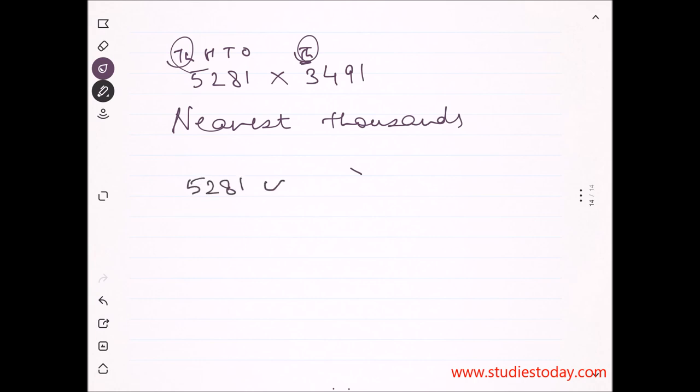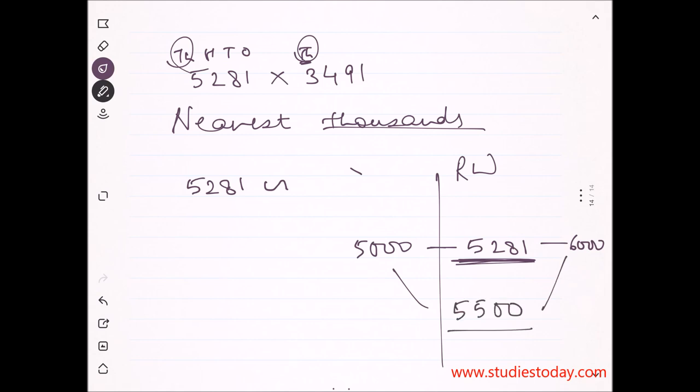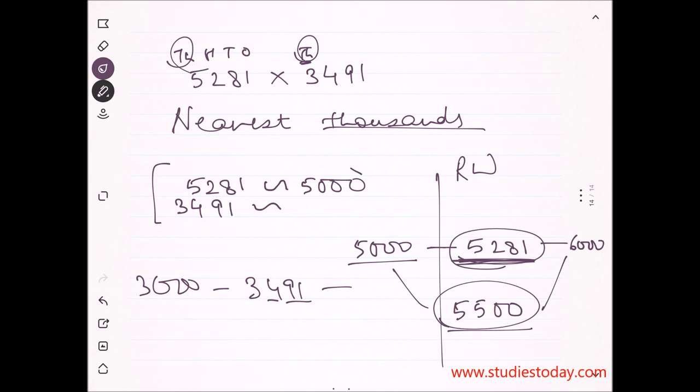5,281 will be rounded off - if we round to nearest thousand, it lies between 5,000 and 6,000. For 3,491, when we round to nearest thousand, it's between 3,000 and 4,000. The midpoint is 3,500. Since 491 is less than 500, it rounds to 3,000.